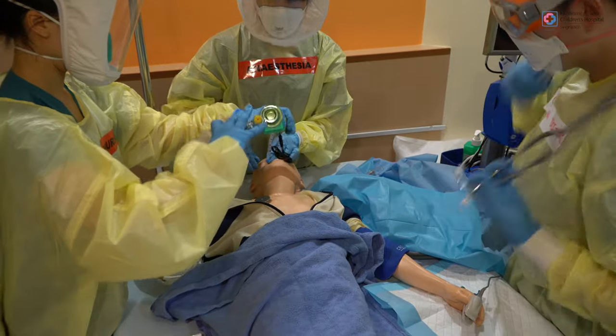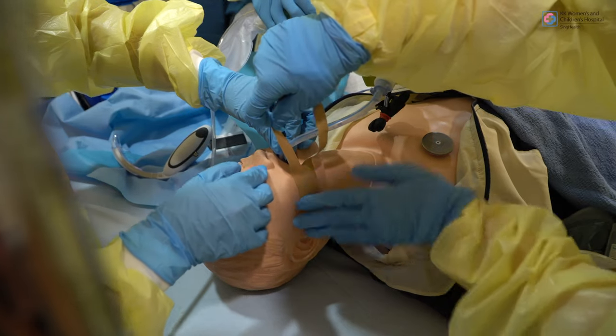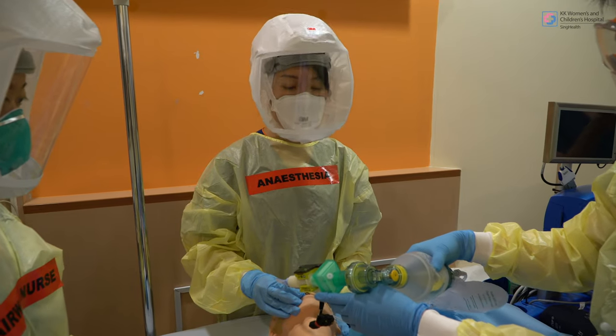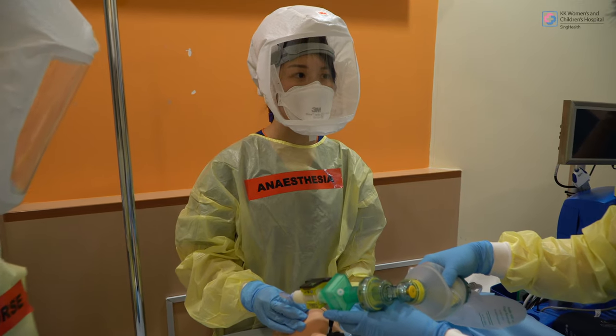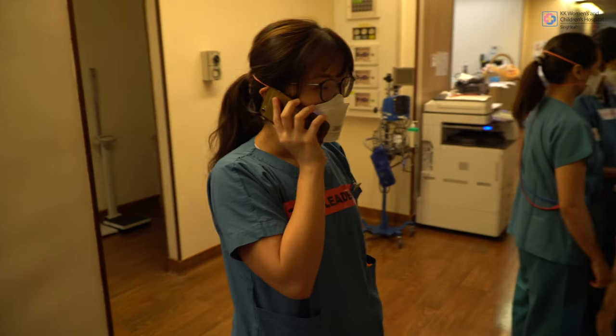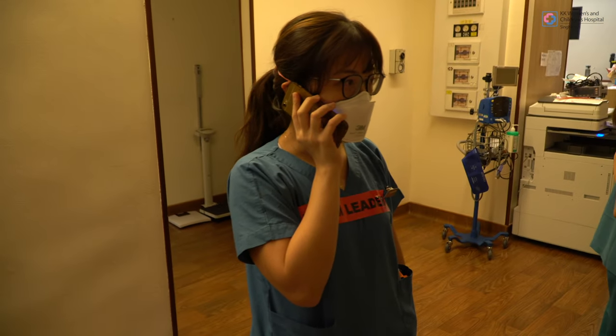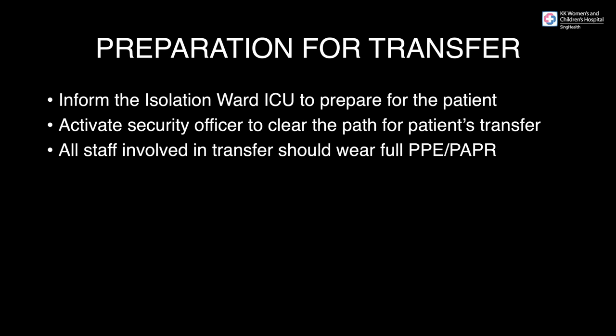Secure the ETT. ETT is in and secure. We are ready for transfer to ward 46 ICU. When the patient is ready for transfer, inform the isolation ward ICU to prepare. Activate security officers to clear the path for the patient's transfer. All staff involved in the transfer should wear full PPE or PAPR.